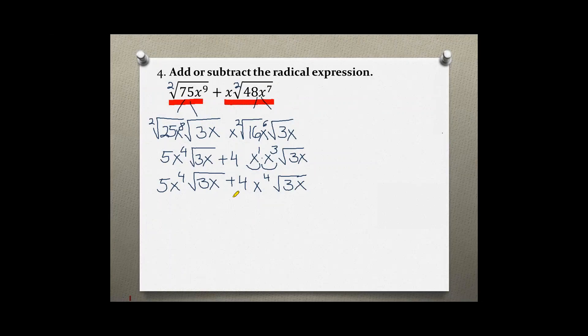Now we have like radicals. Both of them have outside x to the 4th power, and both of them have a radical of 3x. So these are like radicals now, and we can add their coefficients.